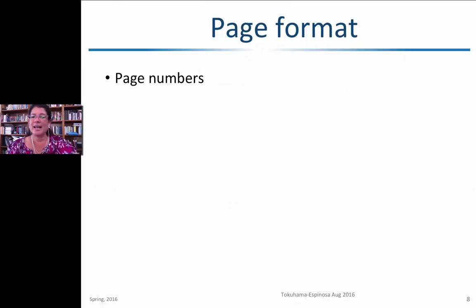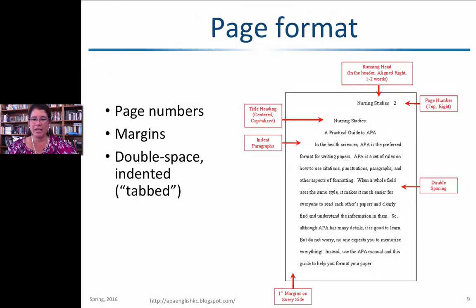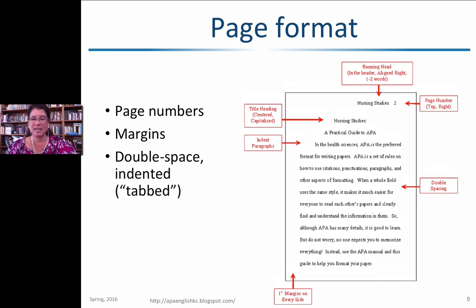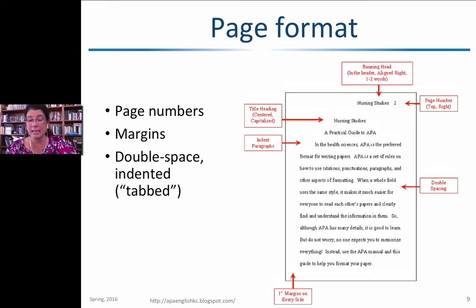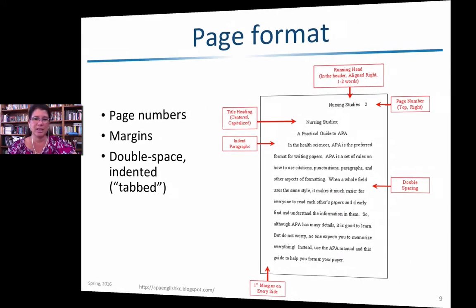What does APA formatting actually look like? Page numbers, margins, and the fact that it's double-spaced and indented. There's no extra line after each paragraph — indentation signals a new paragraph. There's a one-inch margin on the left, right, top, and bottom, and the page number is always in the top right.